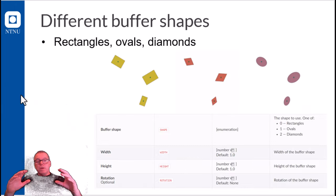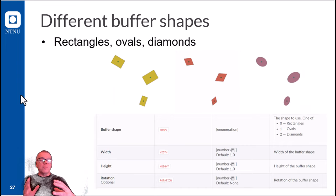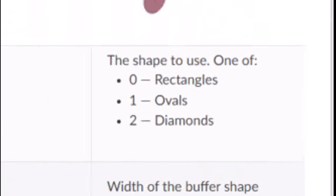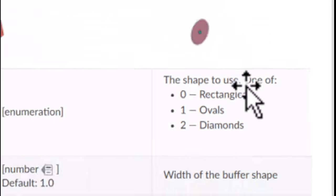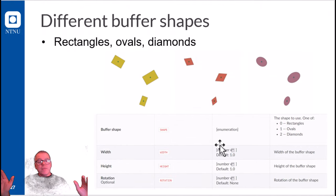And although the default form or the default shape of a point buffer is a circle, you may also have these as rectangles, ovals, diamonds. And you can choose between the shape of these, and you can set the width, the height, and even the rotation of this shape. So here for point buffers, you have many different options.